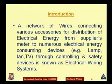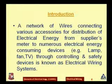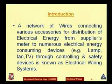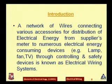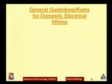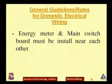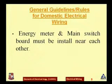A network of wires connecting various accessories for the distribution of electrical energy from the supply meter to numerous energy-consuming devices — like lamps, fans, refrigerators, and TVs — through controlling and safety devices is known as the electrical wiring system. The first guideline is that the energy meter, which measures how much energy you are using at home, and the main switchboard must be installed near each other.